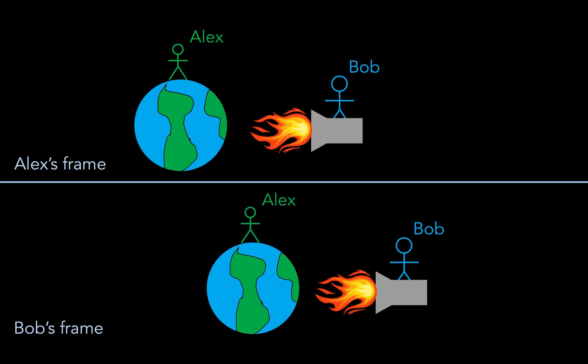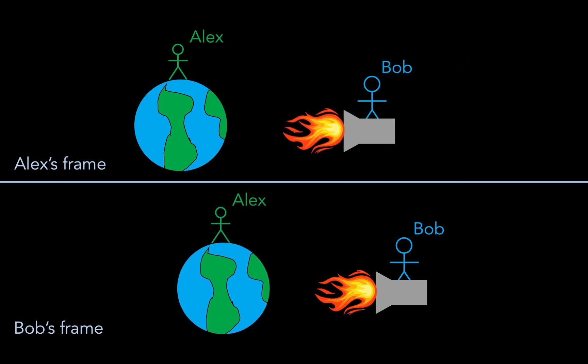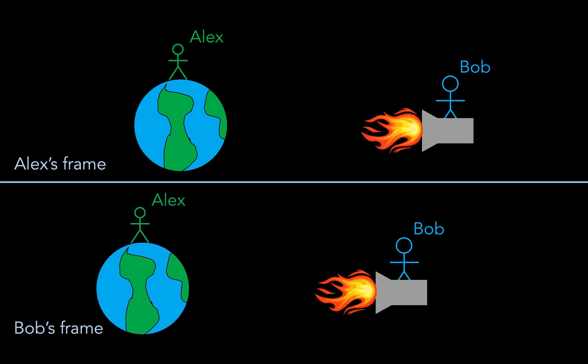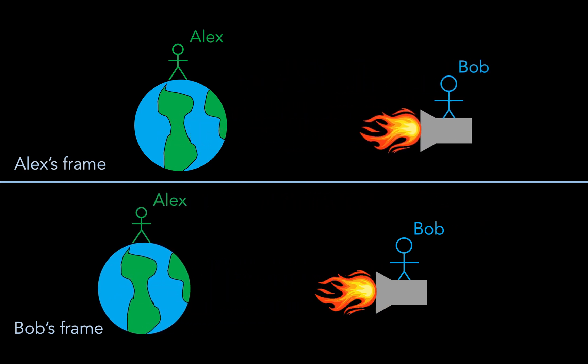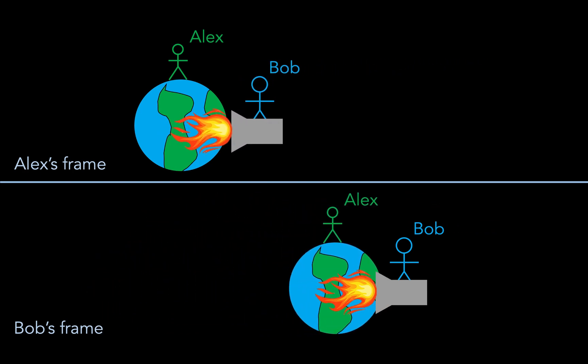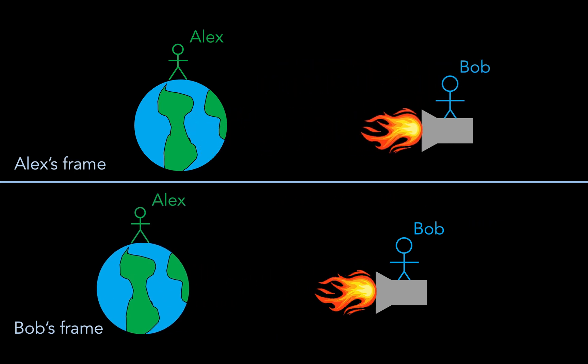But remember, this is physics, not mathematics. And in physics, it turns out that we can tell who's right and who's wrong, and it's down to some elementary physical principles, such as the conservation of momentum in all inertial reference frames.